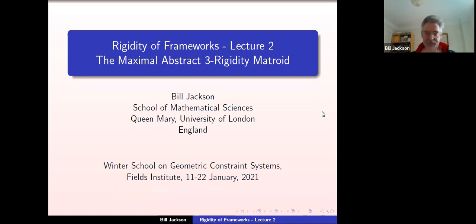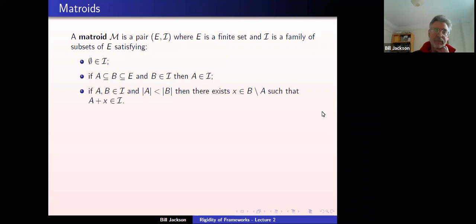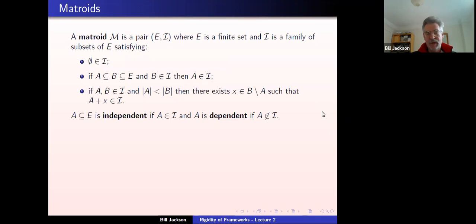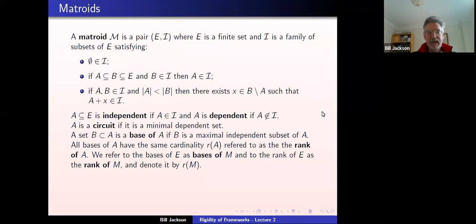We're going to go back to the definition of a matroid, which I don't want to repeat in detail, but a matroid is a ground set A together with a family of subsets I, which we think of as independent sets. The independent sets satisfy these three independence axioms. We call the sets in I independent and the sets not in I dependent. Circuits are minimal dependent sets. A base of a set is a maximal independent subset of that set, and the rank of a subset is the size of a maximal independent subset. The bases and rank of the ground set are the bases and rank of the matroid.